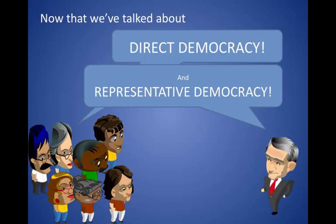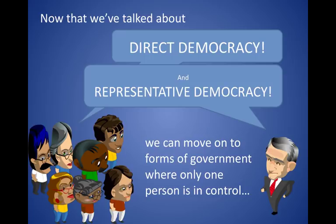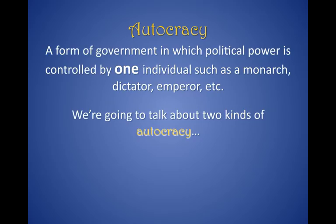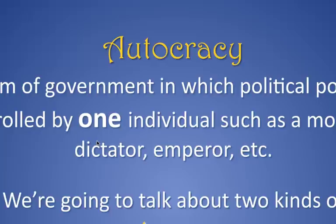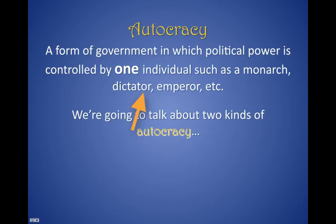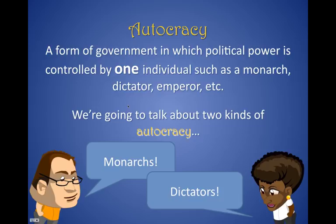Now that we've talked about the different forms of democracy, there are other forms of government. We're going to talk about where only one person is in control — that's called autocracy. Autocracy is a form of government in which political power is controlled by one person, such as a monarch, a dictator, or an emperor. There are two kinds of autocracies, just like there are two kinds of democracies: one ruled by a monarch and one ruled by a dictator.